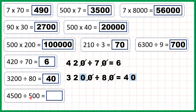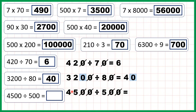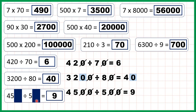Now 4,500 divided by 500. Here we can cancel two end zeros — there are two end zeros in both the dividend and the divisor — so we can cancel them to get 45 divided by 5, which is 9, because 9 times 5 is 45. So that means 9 times 500 is 4,500. So 4,500 divided by 500 is 9, and what we did was cancel two end zeros in the division question and just divide 45 by 5.